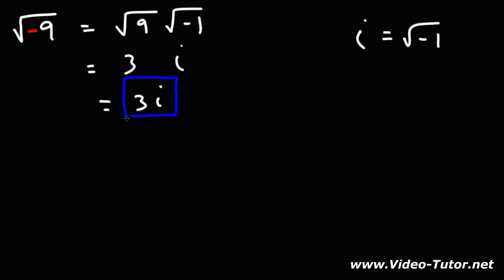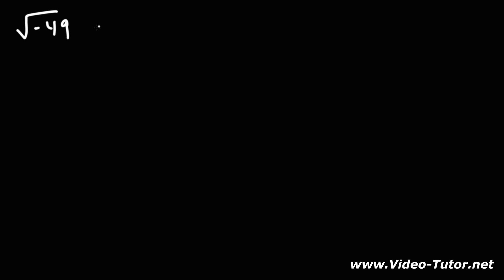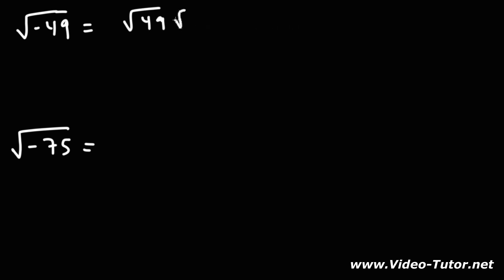So 3i is the answer — that's how we evaluate the square root of negative 9. Now let's try some other problems. Feel free to pause the video and work on these two example problems. The square root of negative 49 can be written as the square root of 49 times negative 1. The square root of 49 is 7 because it's a perfect square — 7 times 7 is 49 — and the square root of negative 1 is i, so this becomes 7i.